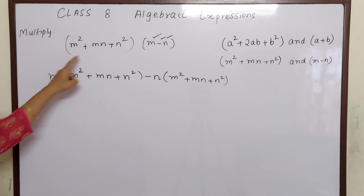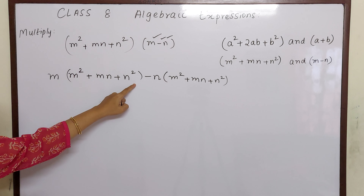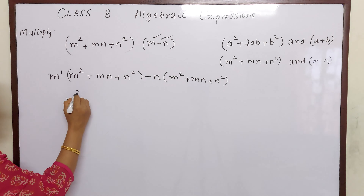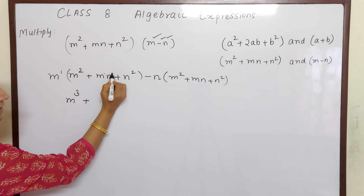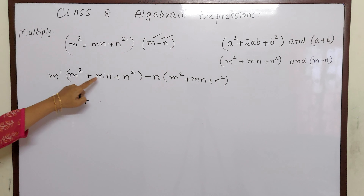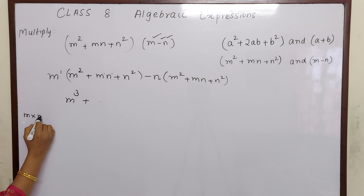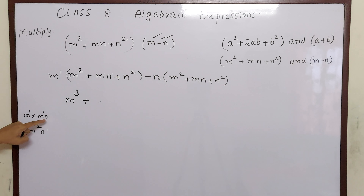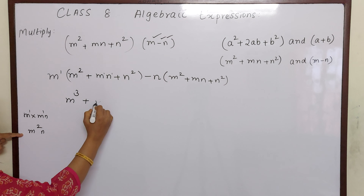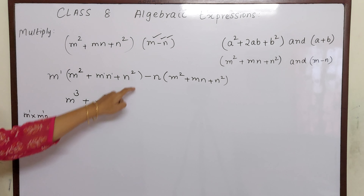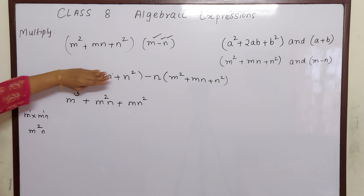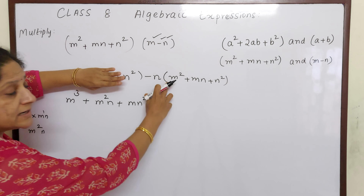Now our job is to multiply each term with m. All terms inside are having plus sign, so don't worry about signs. m¹ × m² = m³. Plus m¹ × mn = m²n, because 1 + 1 = 2 and n is a different alphabet. Plus m into n²: both alphabets are different, so write separately as mn². This completes multiplying by m.